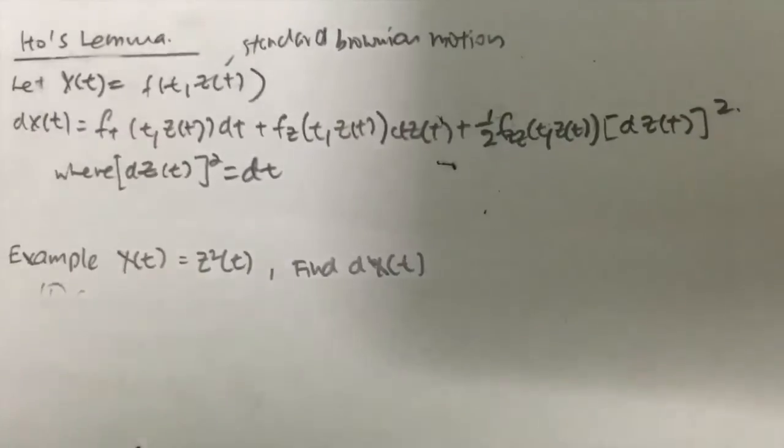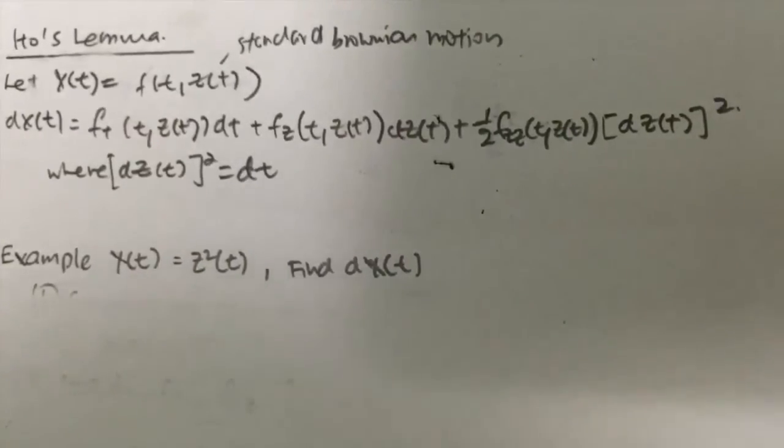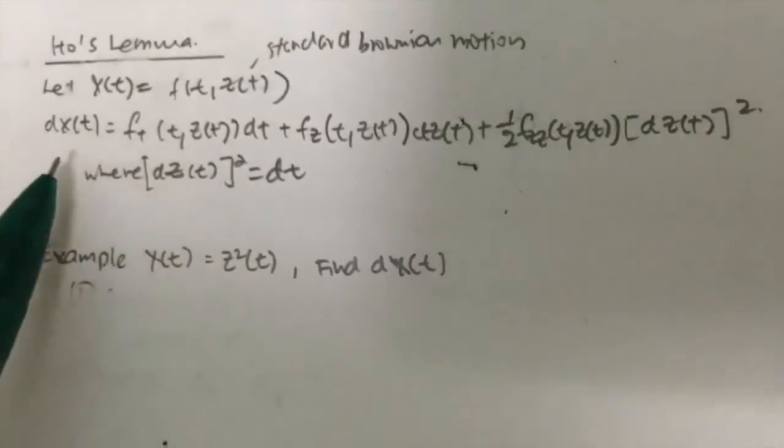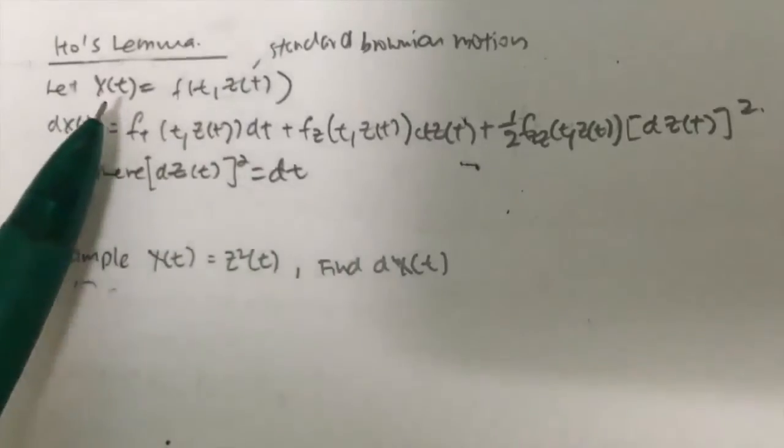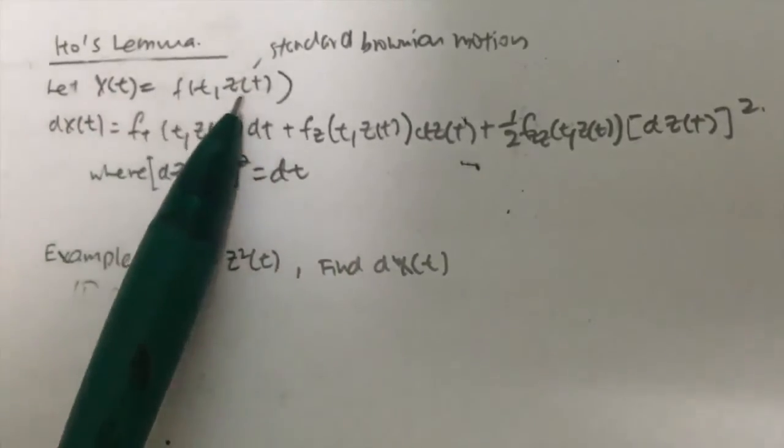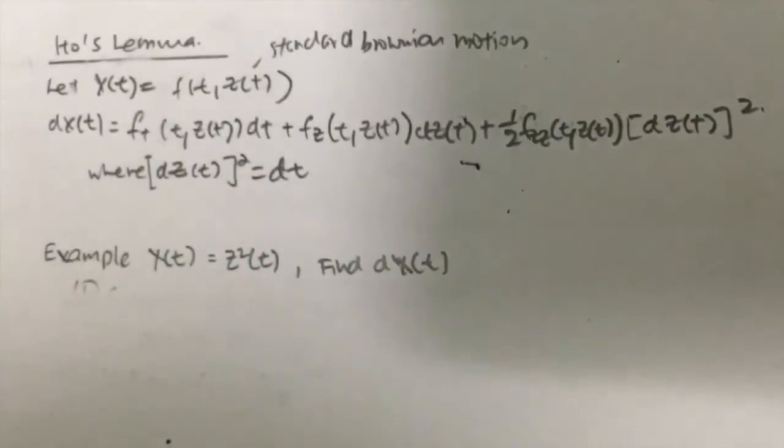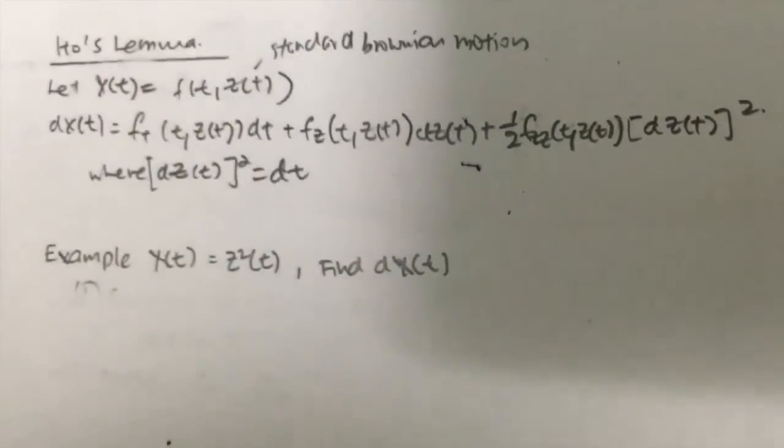The reason why Ito's Lemma is used to calculate the stochastic differential equation for X(t) is because my X(t) involves a random variable Z(t), which follows a standard Brownian motion.